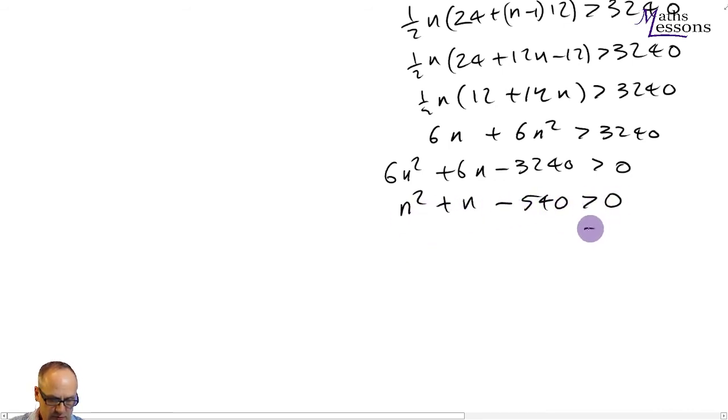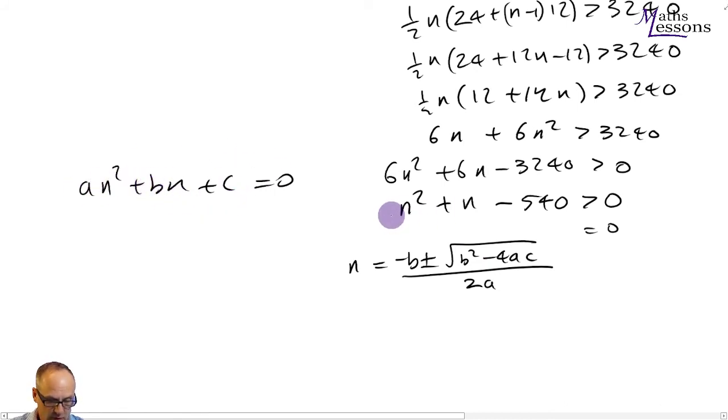Now what we're going to do is we're going to find the point at where it equals 0. And to do that, we use the quadratic formula. So n will equal minus b plus or minus the square root of b squared minus 4ac, all over 2a. This formula solves this equation, given that you know a, b, and c. So we know that a is 1, because 1 lot of n squared. We know that b is 1, because we've got 1 lot of n. And we know that c, the number on the end is minus 540. So put those into your formula. And you get minus 1 plus or minus 1 squared minus 4 times a, which is 1 times c, which is minus 540, all over 2 times a, which is 1.